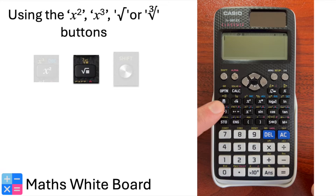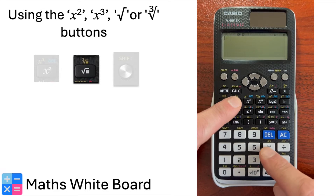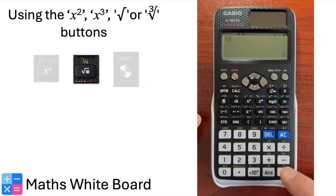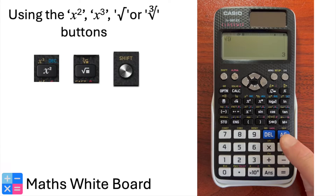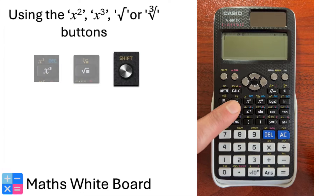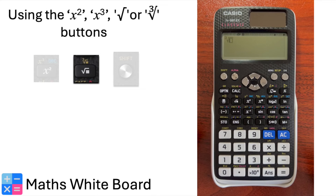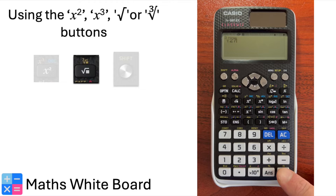Now let's move to square roots. Locate the square root button — this calculates the square root of a number. To find the square root of 9, press square root, then 9, then equals. The result will be 3. Finally, the cube root button calculates the cube root of a number. To find the cube root of 27, press Shift, then the square root button to activate the cube root function, then enter 27, select equals, and the result will be 3.